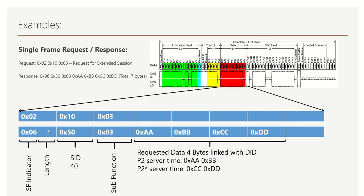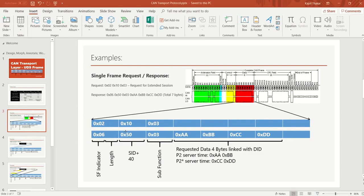Coming to the response part, we always add 0x40 hex to the service ID in the response. Since the service ID is 0x10, adding 0x40 gives 0x50, which appears in the positive response. We will not talk about the negative response code at the moment. The sub-function byte remains the same, 0x03, and then we have the actual response data bytes. For session control, the response includes p2 and p2* server timings.